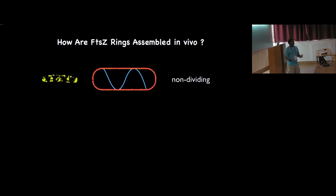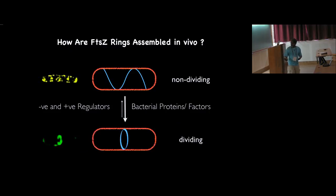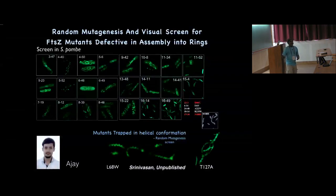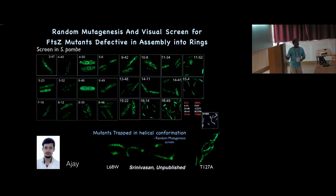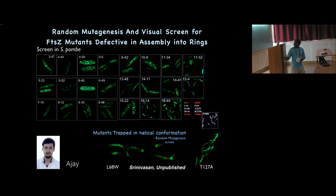To understand how FtsZ assembles, we used our yeast system, got nice FtsZ rings, randomly mutagenized FtsZ, put it back into yeast cells, and looked for FtsZ variants that would not form ring-like structures. This is easier in yeast than in bacteria, because in bacteria any ring-assembly mutant would be lethal and you would not recover them. We found a bunch of mutants that do not assemble into rings, and interestingly two of them are trapped in helix-like structures.